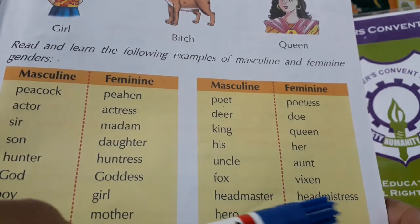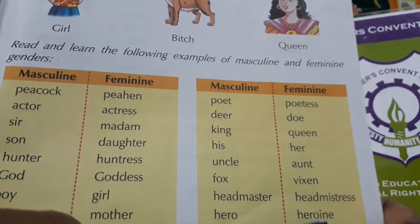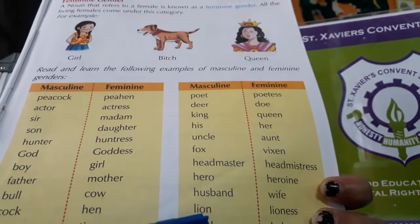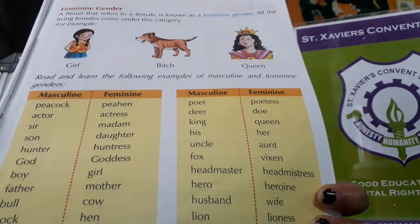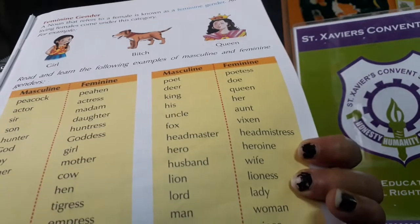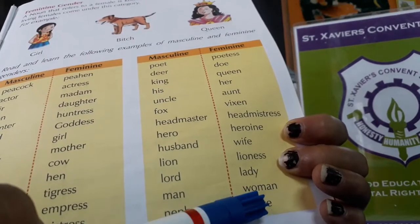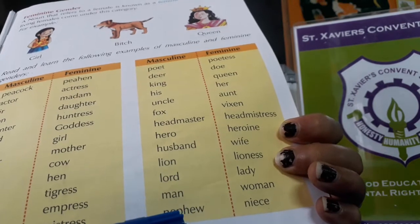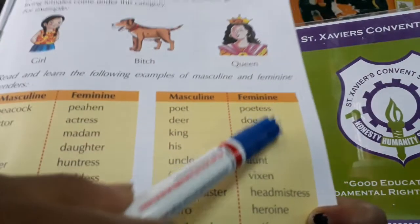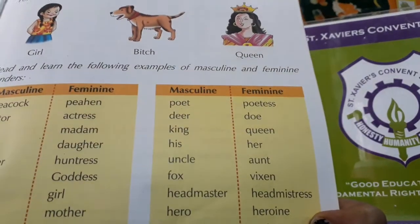Continuing: hero–heroine, husband–wife, lion–lioness, lord–lady, man–woman, nephew–niece (in Hindi, bhanja–bhanji). These are the feminine gender forms, and their masculine counterparts are the masculine gender.